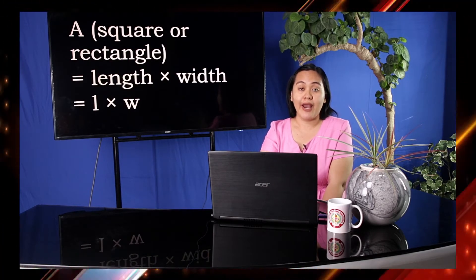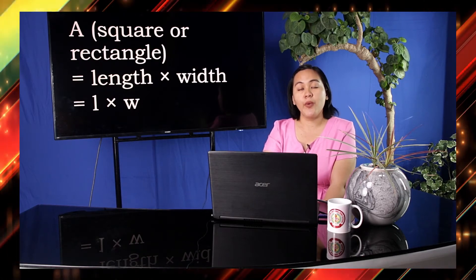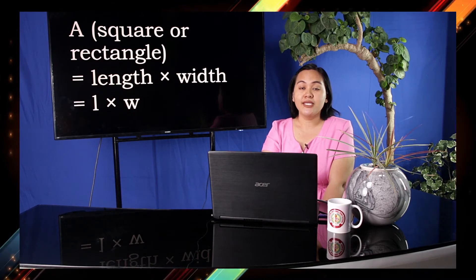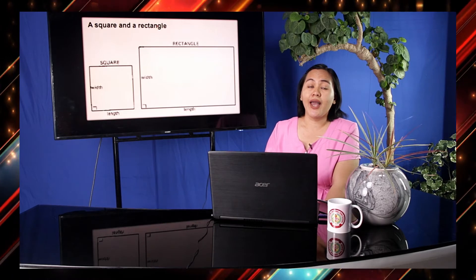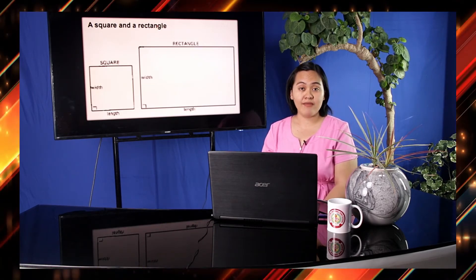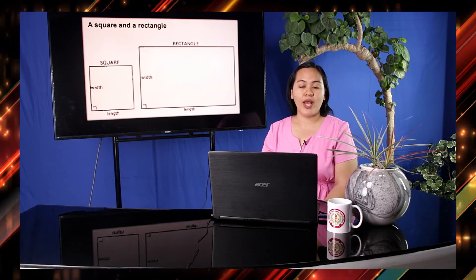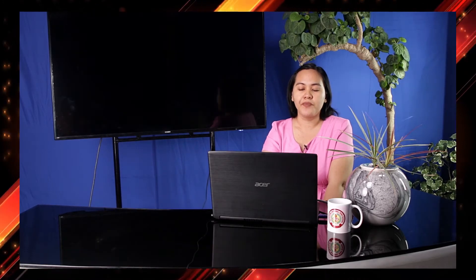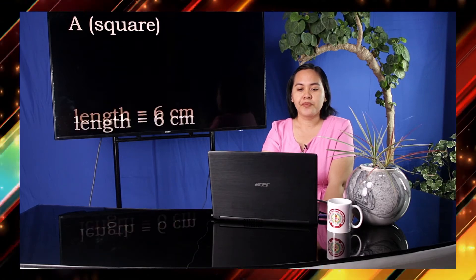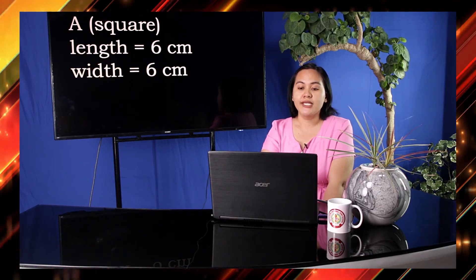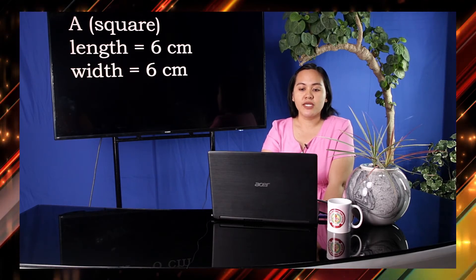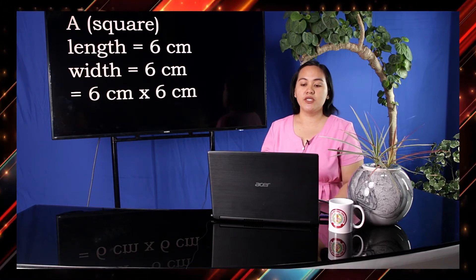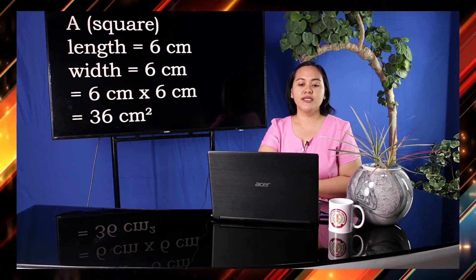Now, let's solve for the area of a square or a rectangle. The formula is length times width, L × W. Although these are different shapes, we use the same formula because both square and rectangle have four right angles. For our example, length is equal to 6 centimeters and width is equal to 6 centimeters. Using the formula length times width: 6 cm × 6 cm equals 36 square centimeters.